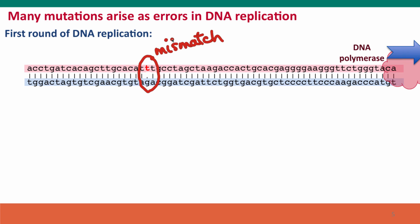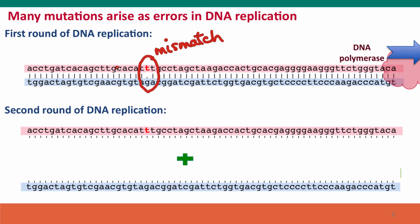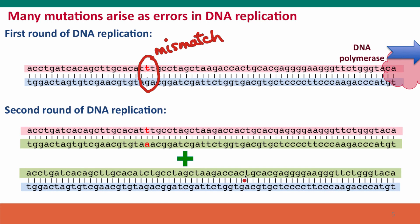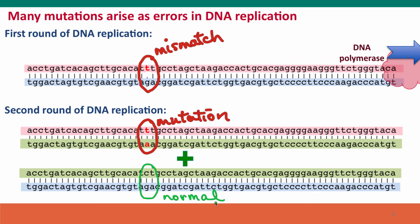However, a mismatch is not a mutation by the definition we just went over. When this DNA is replicated again at the next cell division, each of its two strands serves as a template for a new strand — the new strands are colored green. One of these double-stranded DNAs contains a changed base pair: this is a mutation. The other daughter DNA molecule contains normal sequence DNA.